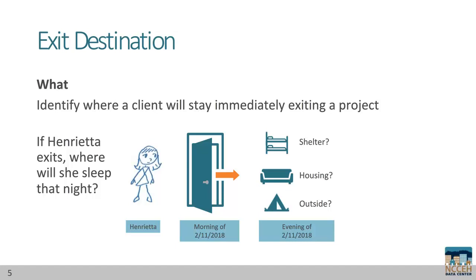Last but not least, we have exit destination. This element asks which housing situation the client stays in the night they exit the project. For example, if Henrietta exits, where will she sleep that night? Say she exits the morning of February 11th — that evening, will she sleep in a shelter, in housing, or maybe outside? This element reflects our ultimate goal for every project: to support clients to find housing.